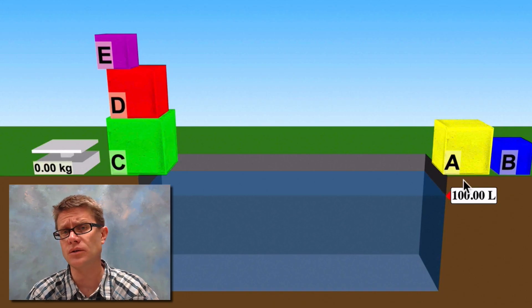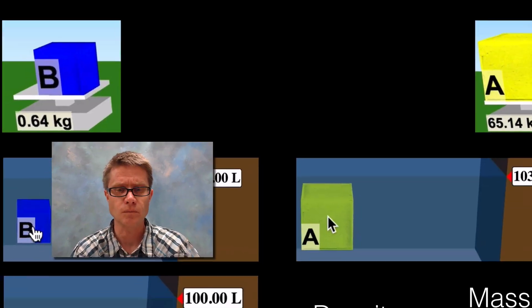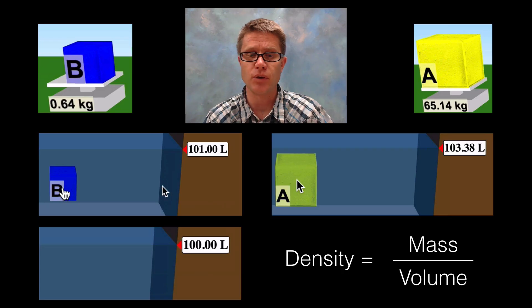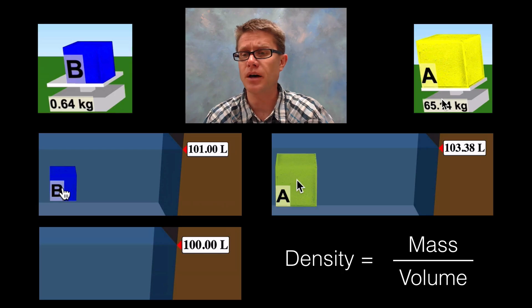Here's the important information that you need. You can see that both of them started with a water level at 100 liters. With object B, that rose to 101 liters and it had a mass of 0.64. With object A, it rose to 103.38 and it had a mass of 65.